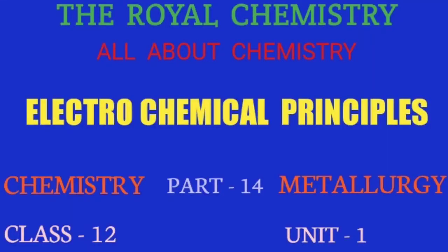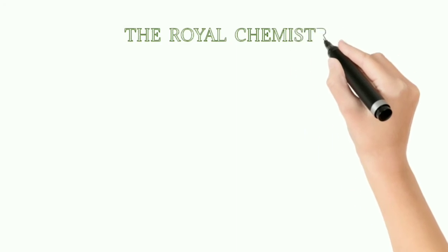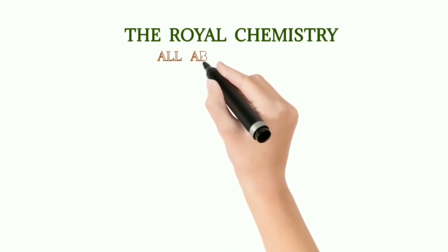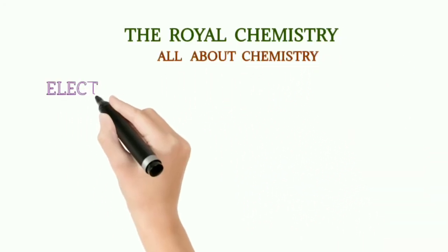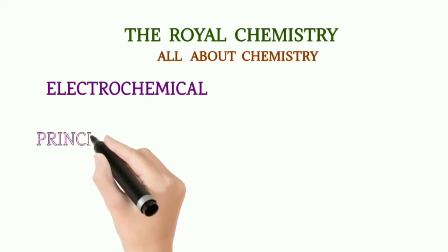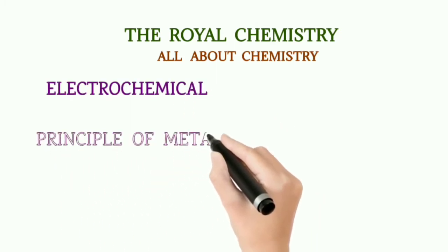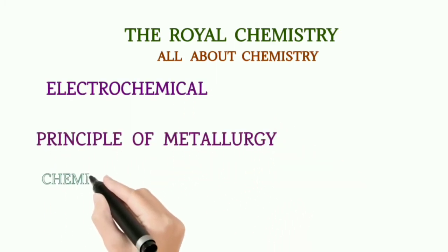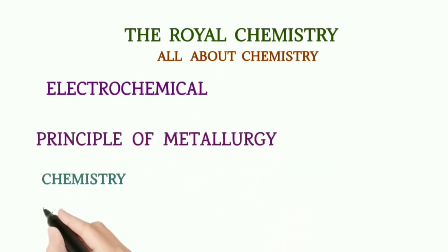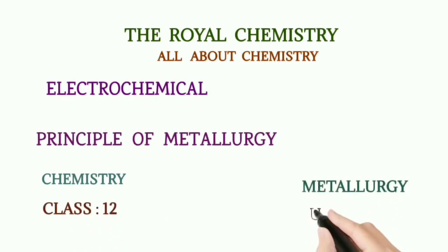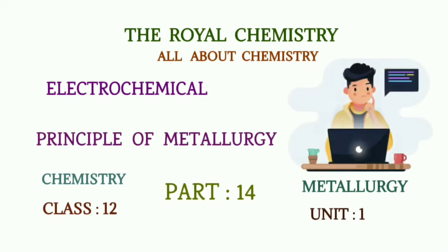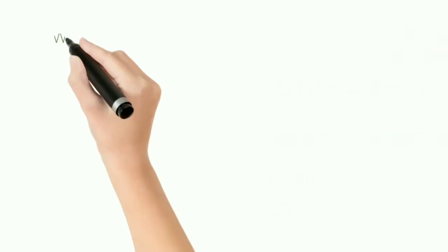Hello, welcome to the channel The Royal Chemistry — all about chemistry. In today's video we are going to discuss about electrochemical principles of metallurgy. It's in Class 12 Chemistry, Unit 1: Metallurgy.